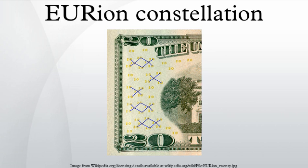The following table lists the banknotes on which the Orion Constellation has been found so far. Countries where all recent banknotes use the constellation are shown in bold.